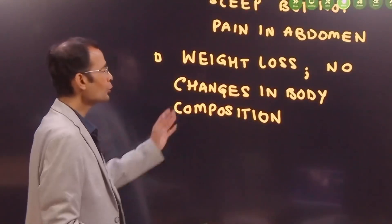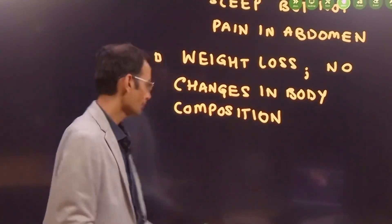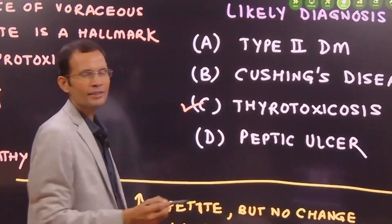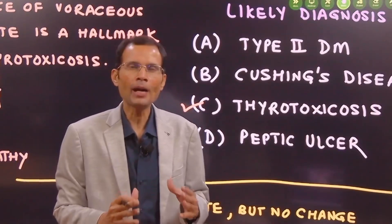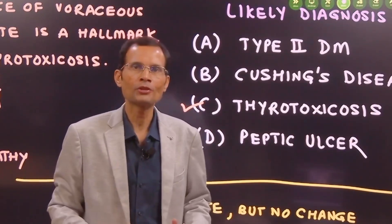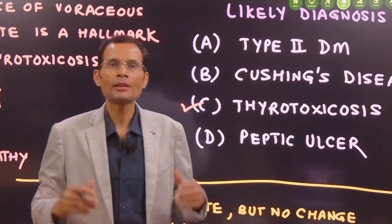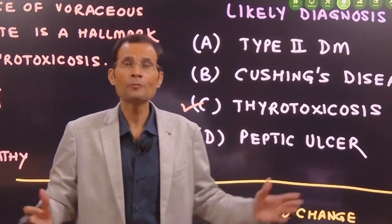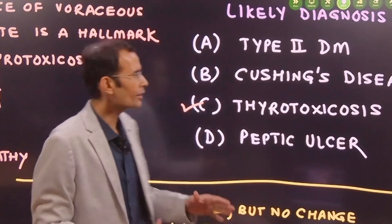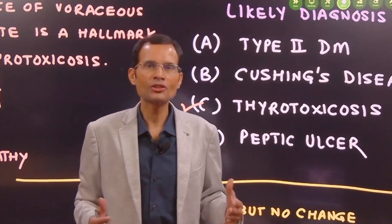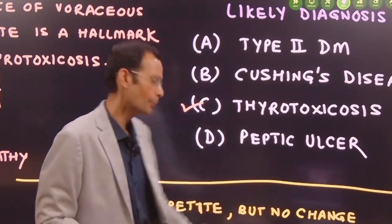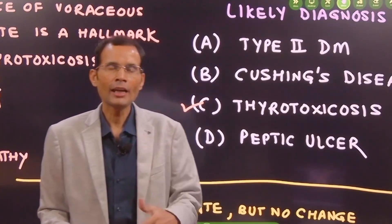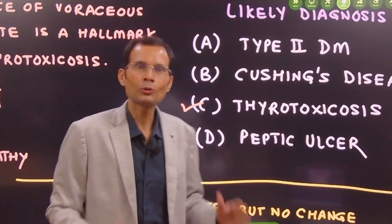Weight loss, but no changes in the body composition. Well, our option was Cushing's disease. And you know, in the Cushing's disease, there is a definitive pattern of changes in body composition. Moon face, protuberant belly, but thin limbs, centripetal redistribution of fat, and breakdown of proteins. That's not the case here. There is no apparent change in the body composition as described by the patient. And therefore, ruling out all these, the most likely diagnosis appears to be thyrotoxicosis.